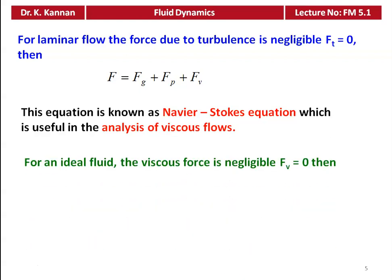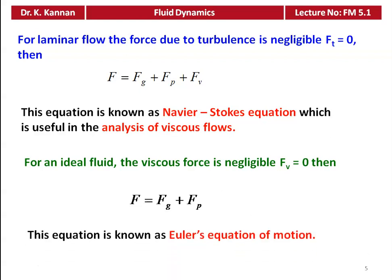Now we take the ideal fluid, where the effect of viscosity is negligible, Fv = 0. The equation becomes F = Fg + Fp, where Fg is the body force or force due to gravity and Fp is the pressure force. This equation is called the Euler's equation of motion.